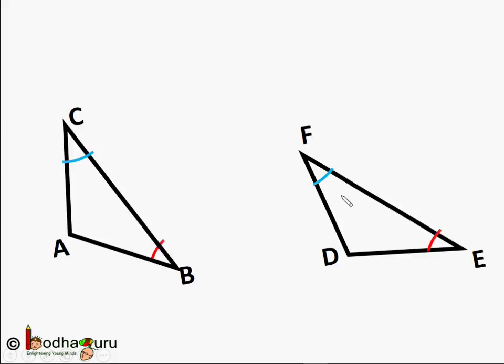So, let's say they are not congruent. Say, AB is greater than DE. So, we can take a point P on AB such that PB is equal to DE.